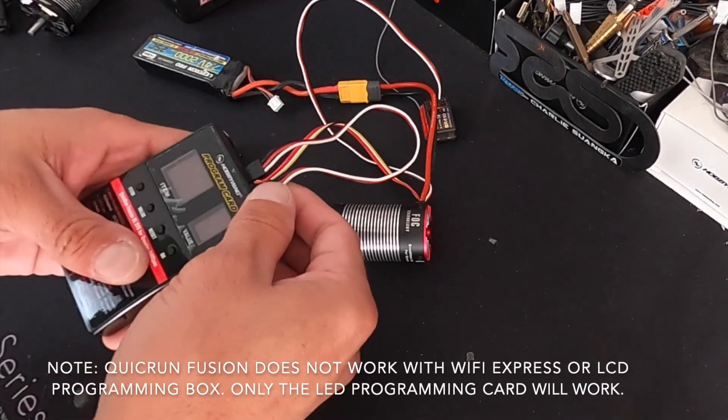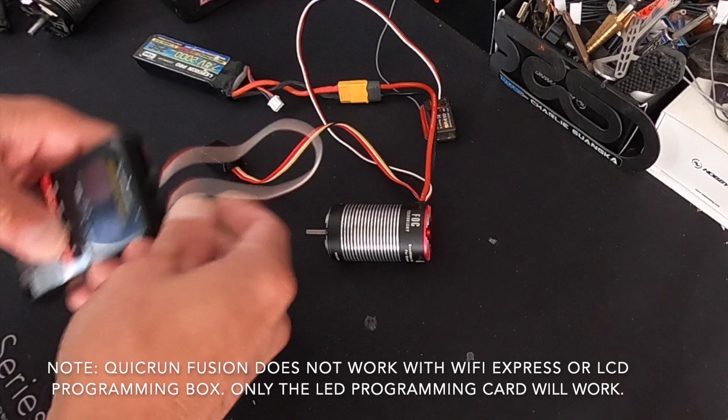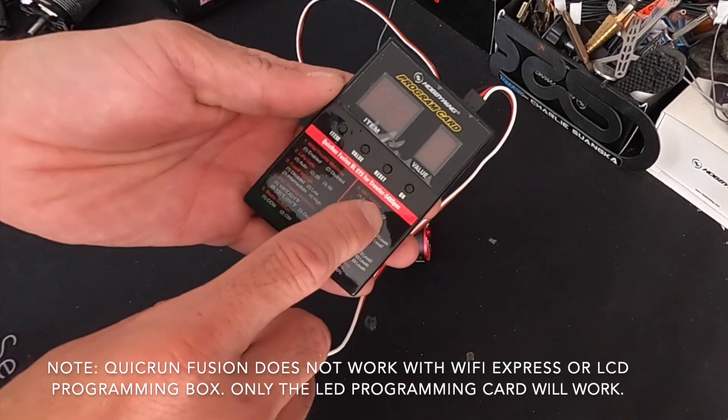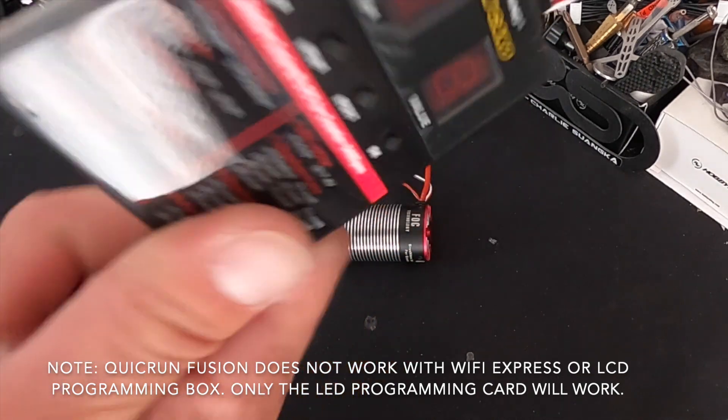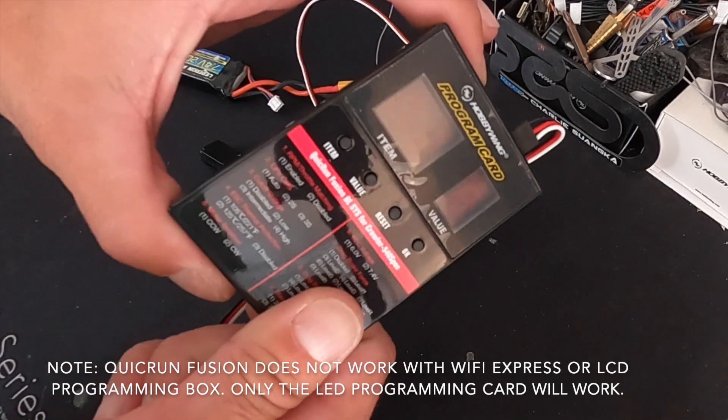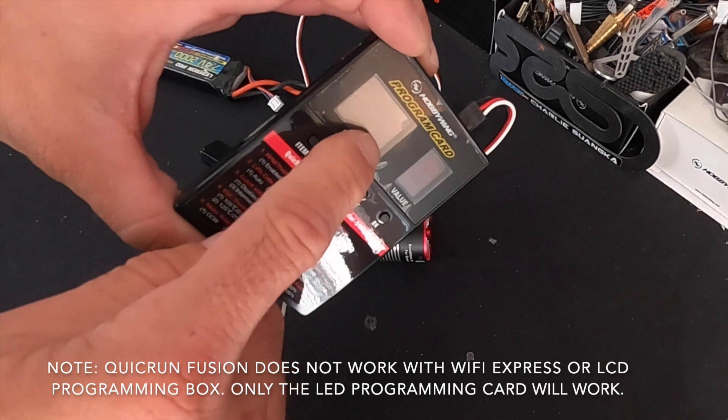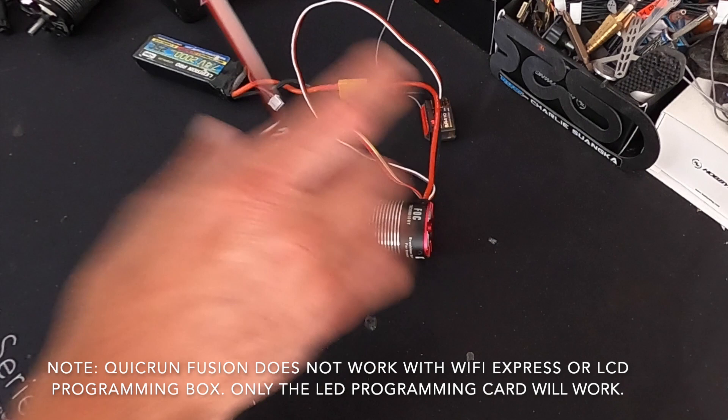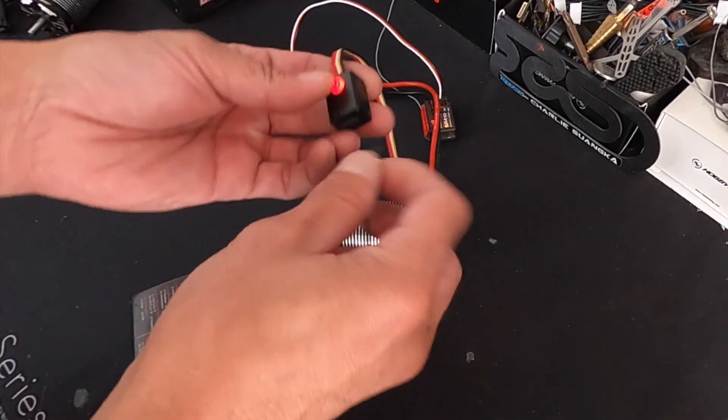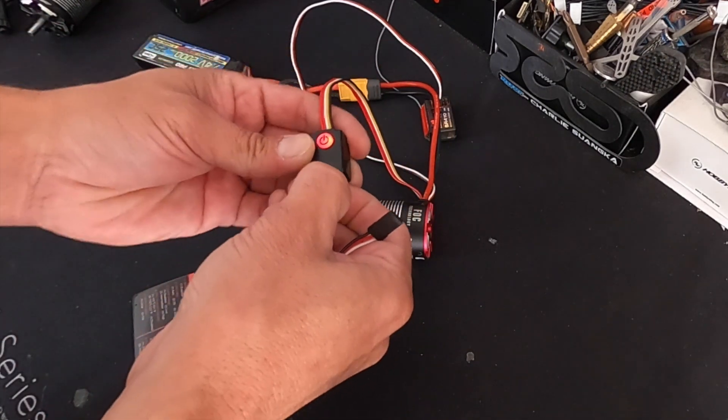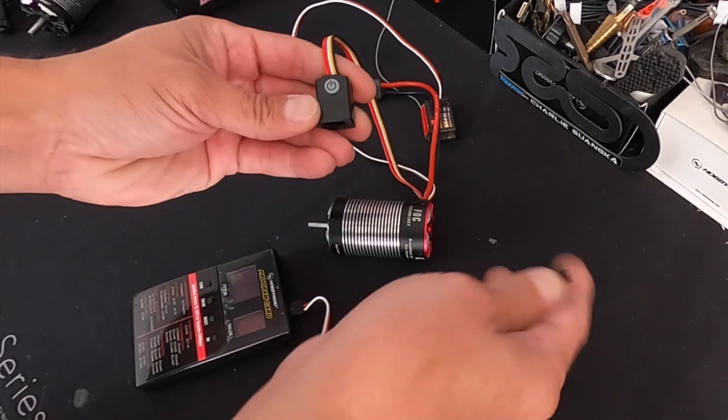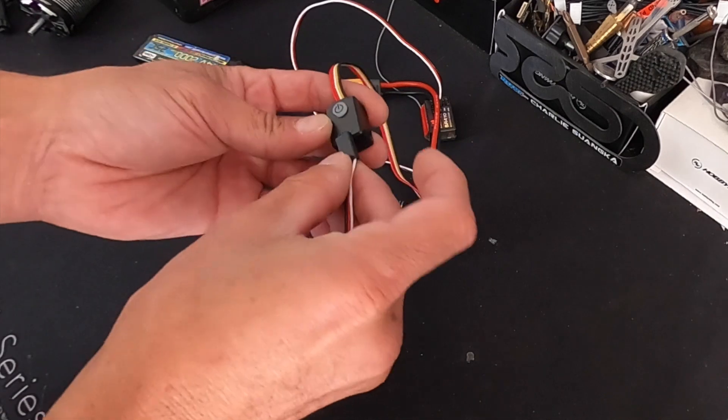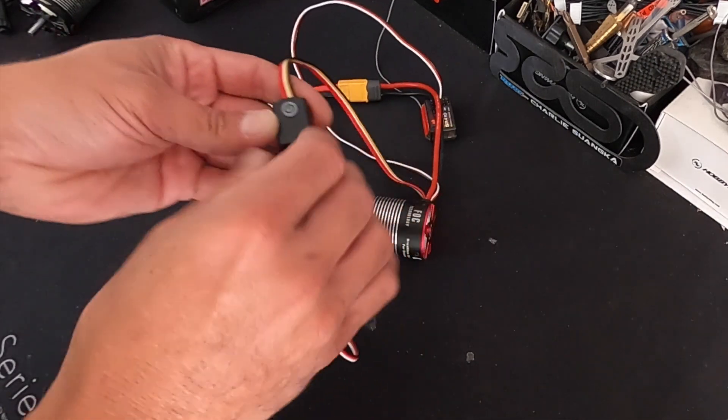So let's talk about the setting changes that there are. The programming box that comes with this is the LED program card. It's got red numbers, four buttons on it. These cards, any of the LED cards like this that have the numbers can be used, even if the sticker doesn't match. The settings are inside the speed control, so if you plug this in and you have the instruction manual, you'll be able to use any of the programming boxes. Let's say you have a WP1080 or any of the other speed controls that came with the box, they all work. You just can't use the sticker that's on the box. You have to use the instruction manual for your speed control.